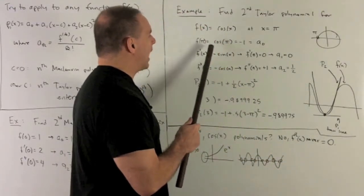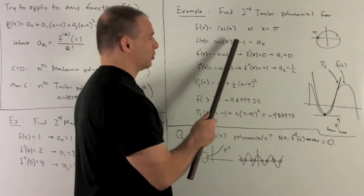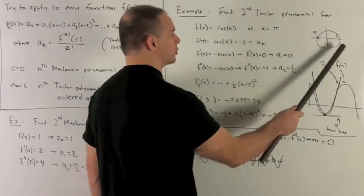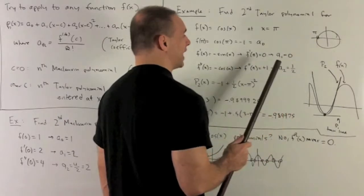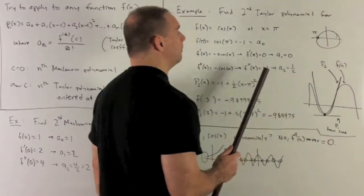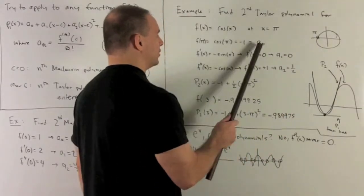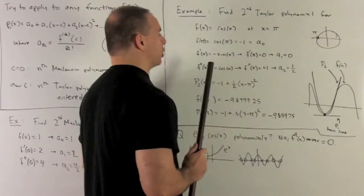So what will we get? We're going to have f(π) equals cosine π equals minus 1. So remember, unit circle, we're drawing π back here. Cosine is the x value, so that's a minus 1. That's going to be our a₀. That's just given by evaluating the function at your point.